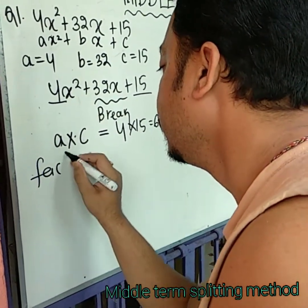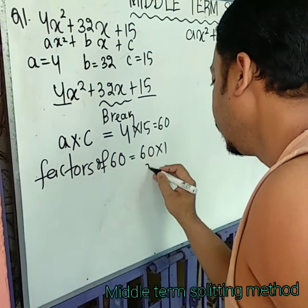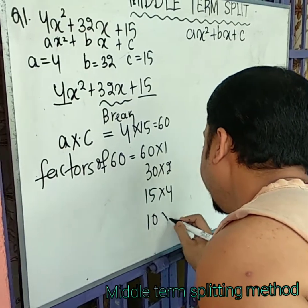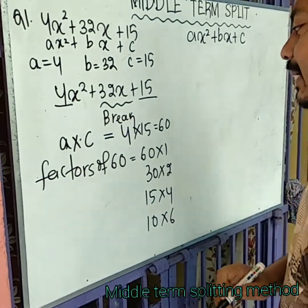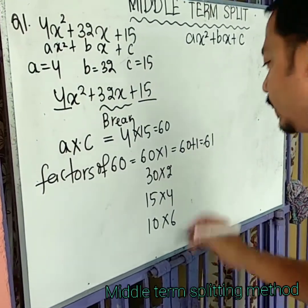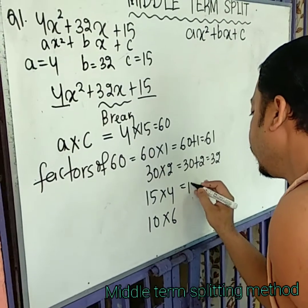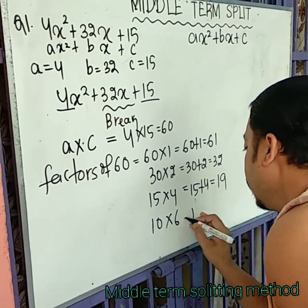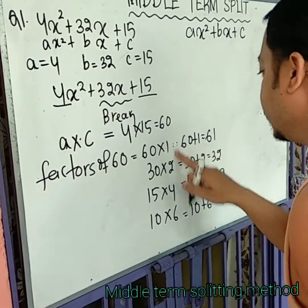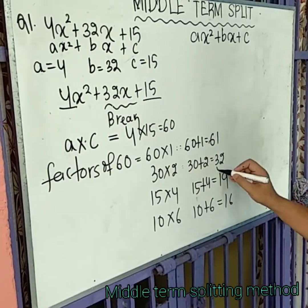We need to find factors of 60 that add up to 32. The factors are 30 and 2, because 30 times 2 equals 60 and 30 plus 2 equals 32.